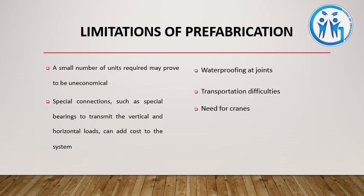Now we will look at the limitations of prefabrication. A small number of units required may prove to be uneconomical — if you have a small number of production units, it may not be economically viable. Special connections such as special bearings to transmit vertical and horizontal loads can add cost to the system.